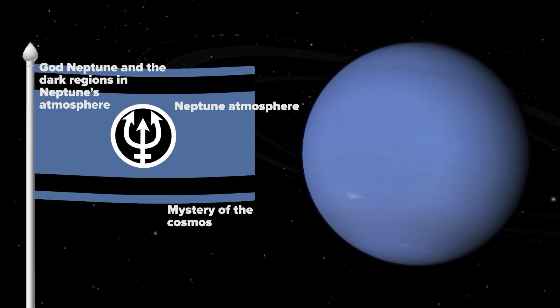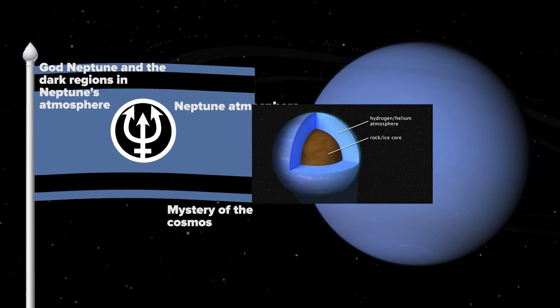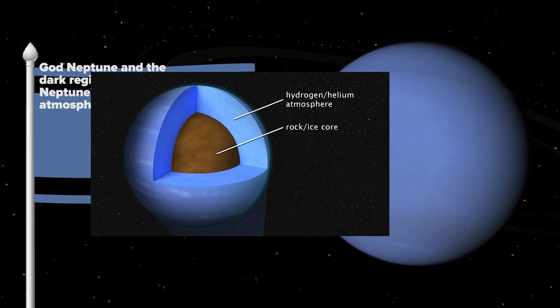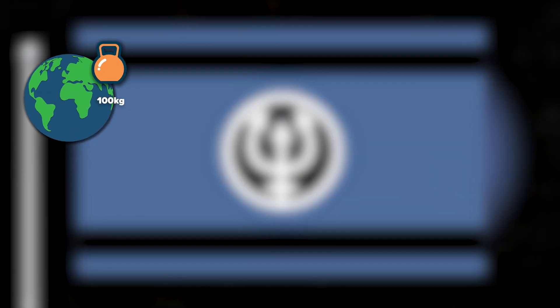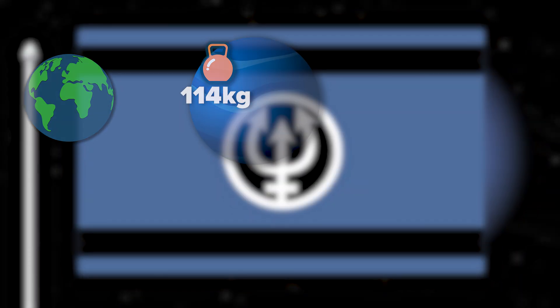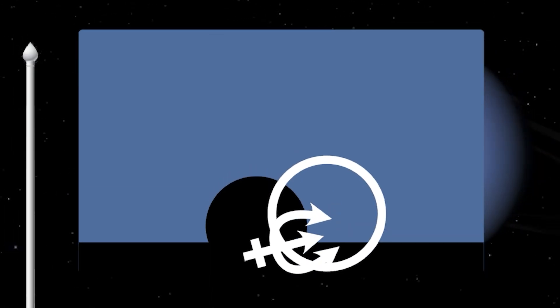Because Neptune is a gaseous planet, it has a large mass and size, as well as a large gravitational force. For example, an object with a mass of 100 kilos on Earth will have a mass of 114 kilos on Neptune. Neptune's gravity is much stronger than Earth's. Thank you for watching.